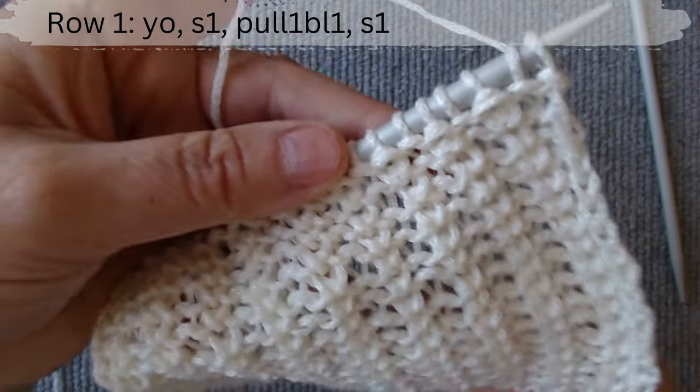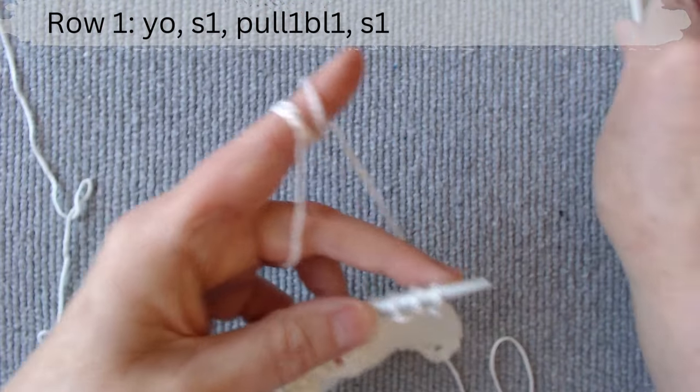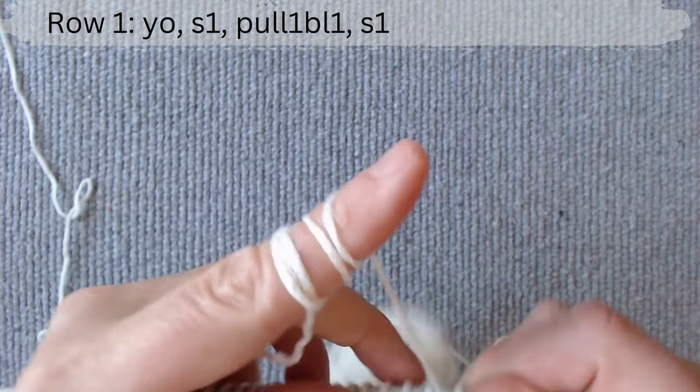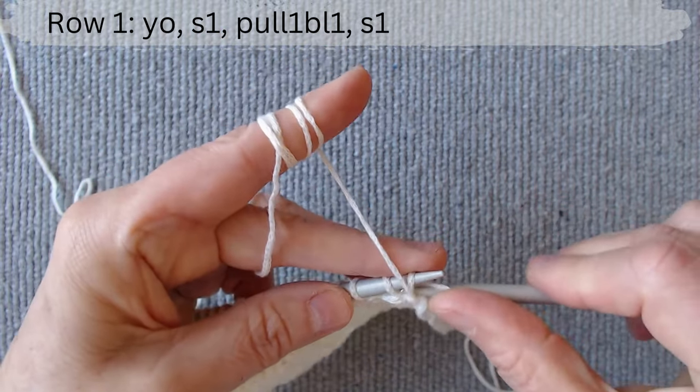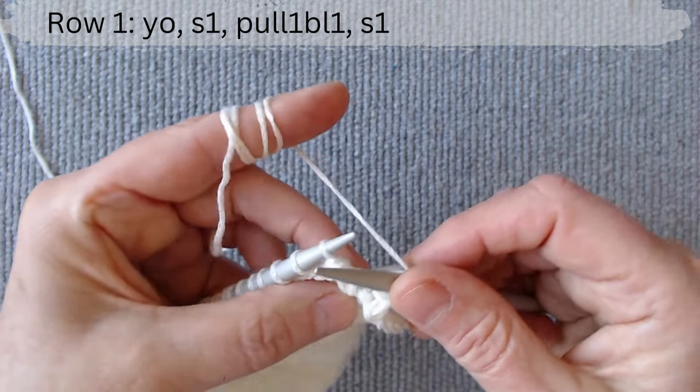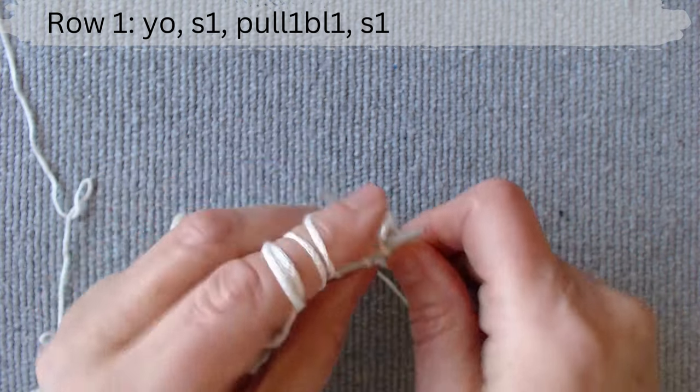Row one, wrong side. The repeat pattern is: slip one loop with a yarn over, pull a long loop one row below the second loop, and slip the second loop without knitting.